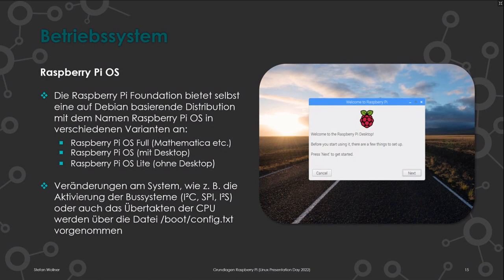Veränderungen am System, wie die Aktivierung von Bussystemen oder das Übertakten des Raspberry Pi, können über die boot config.txt vorgenommen werden. Man muss das aber nicht wissen – die Foundation hat den Einstieg möglichst einfach gehalten. Es gibt einen grafischen Konfigurator, über den man diese Bussysteme aktivieren und den Raspberry Pi übertakten kann. Das zeige ich dann in der Live-Ansicht.